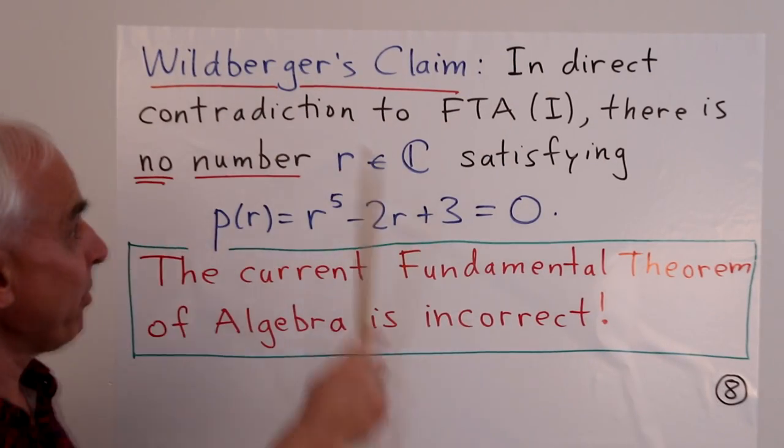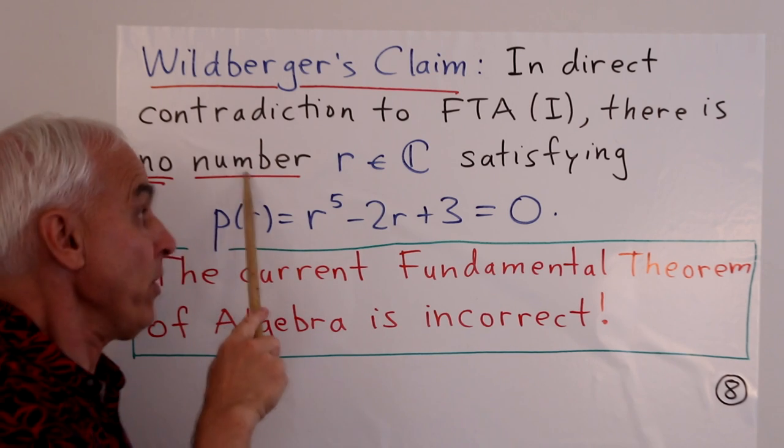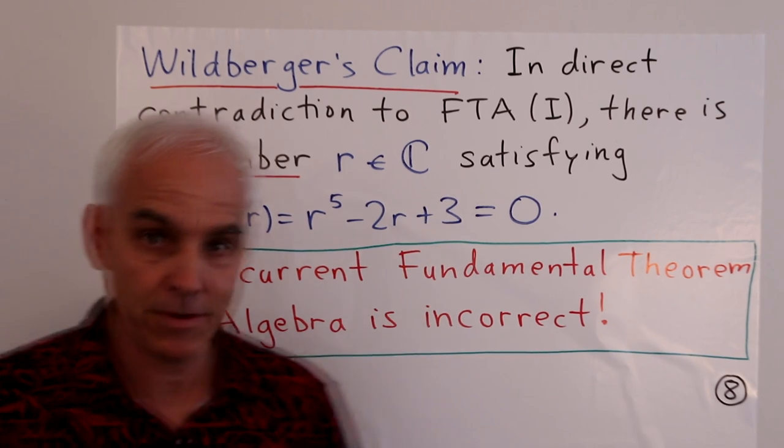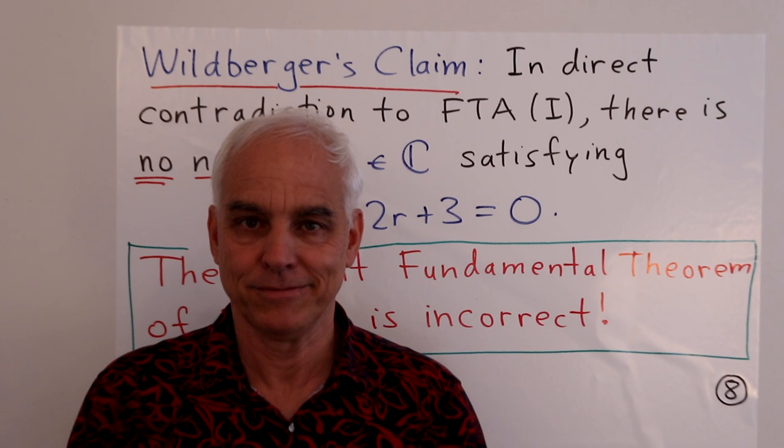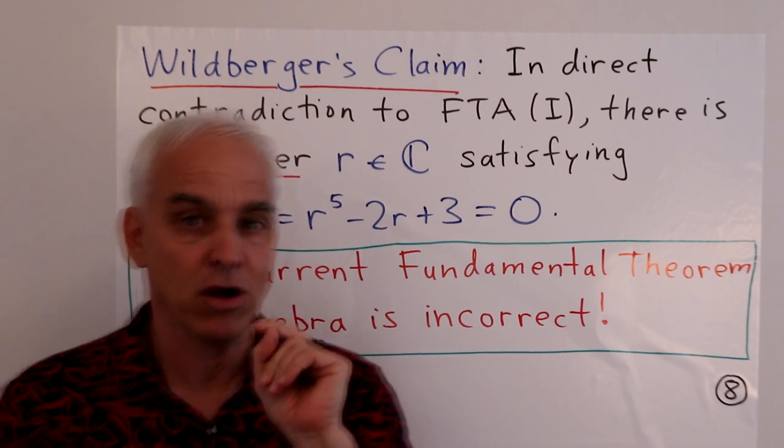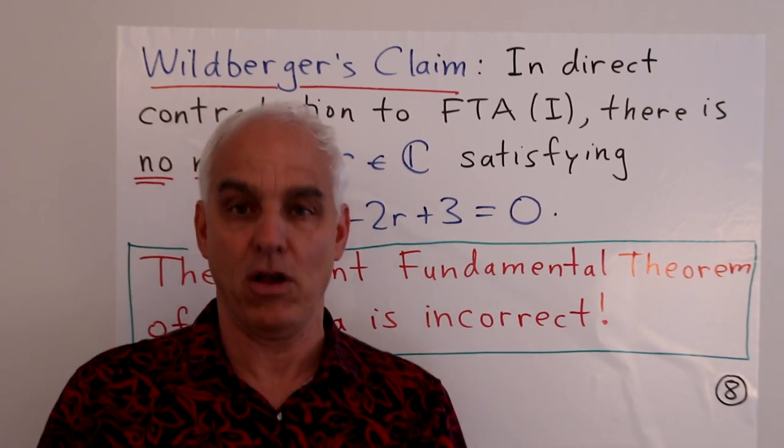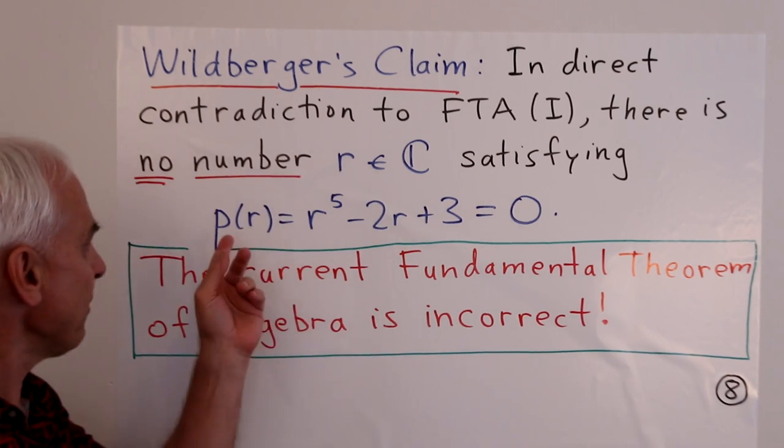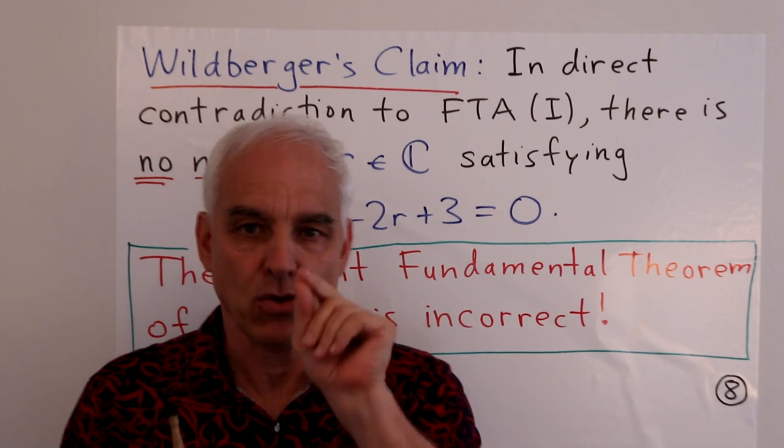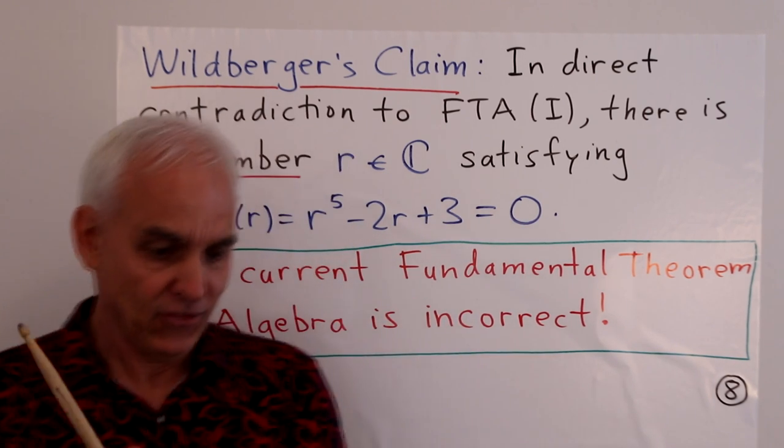There's a very serious problem logically. So here's my claim. Wildberger's claim that in direct contradiction to the fundamental theorem of algebra, part one, there is in fact, no number r in C satisfying p(r), which is r^5 - 2r + 3 = 0. I claim there is no such number. This is in direct contradiction to the fundamental theorem of algebra. I do not dispute that there are complex numbers that you could plug in here and you would get something that's close to zero. I do not dispute that at all. I'm happy to believe that. I'm happy to believe that you can get values here for which this thing is some very, very small complex number that's very close to zero. No problem. But you cannot find a number r, complex number, such that p(r) = 0.